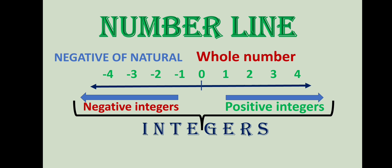Zero is neither negative nor positive. The difference between two consecutive integers is always one. When we move right of zero we get one number more, and when we move left of zero the values are decreasing by one.